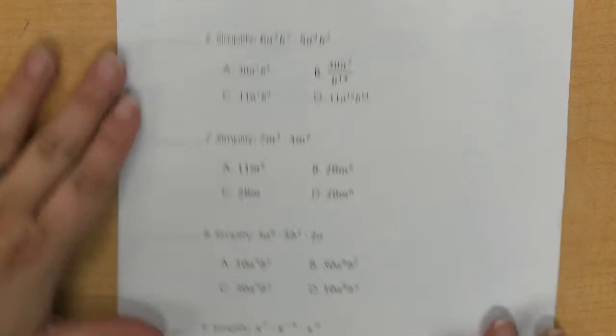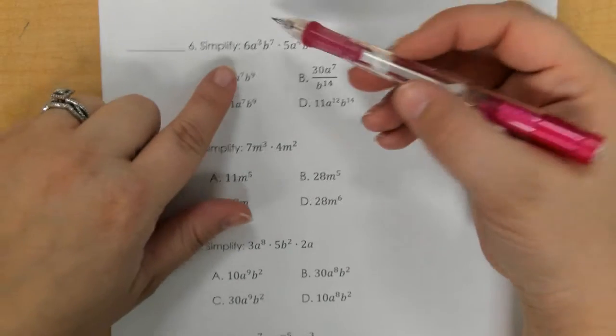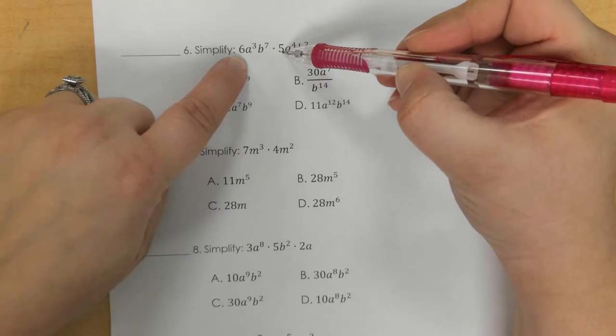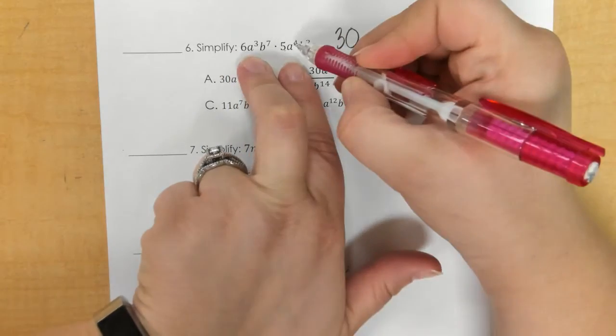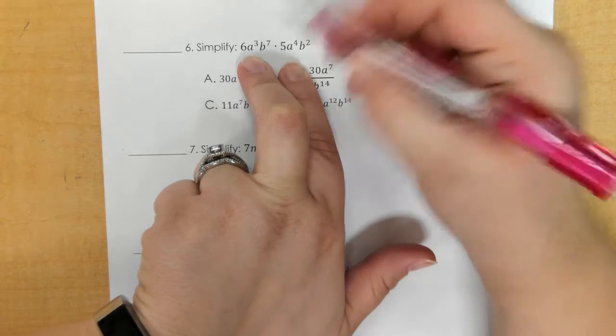On the back for number 6, you multiply the big numbers, the 6 and the 5, and that makes 30. We add the exponents, 3 and 4, so that makes 7.